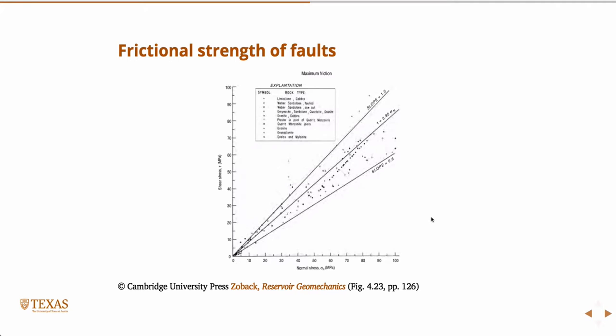So this slope right here is 0.6. So you can see that everything above it is sort of between 0.6 and 1. There are a few outliers above which don't even make sense. There's obviously something wrong with the experimental measurement. But for the most part, all these values for all these different rocks fall in between 0.6 and 1. So we almost always use 0.6 for the coefficient of friction.